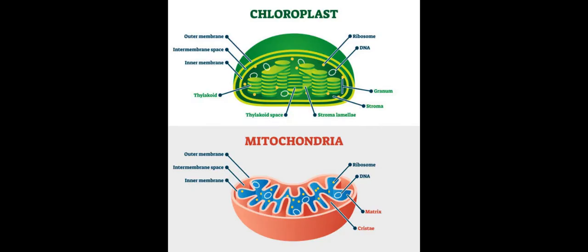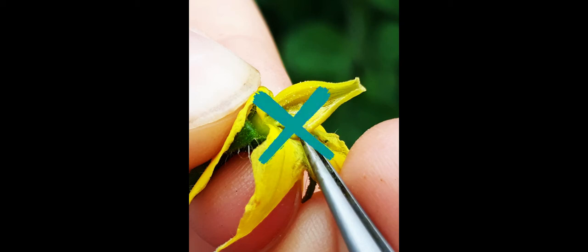Cytoplasmic male sterility is governed by plasmogenes located in mitochondria or chloroplast of the cell. Cytoplasmic male sterility prevents self-pollination and promotes cross-pollination. Hence, it is employed in hybridization programs to eliminate the need for emasculation.